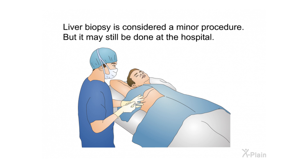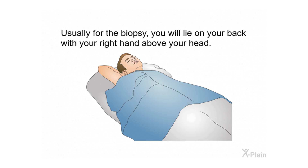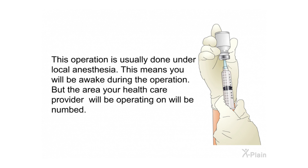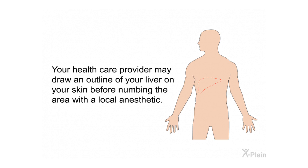Procedure. A liver biopsy is considered a minor procedure, but it may still be done at the hospital. Usually for the biopsy, you will lie on your back with your right hand above your head. This operation is usually done under local anesthesia, meaning you will be awake but the area being operated on will be numbed. Your health care provider may draw an outline of your liver on your skin before numbing the area with a local anesthetic.